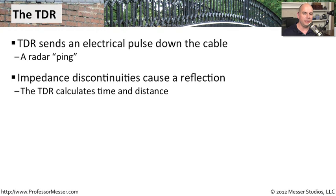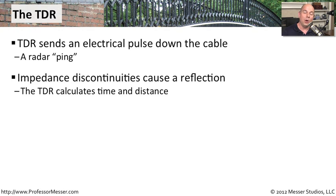The TDR is a very sensitive device that can detect any type of reflection coming back. Because it can calculate how long it took to receive the signal back, it can determine how far down the cable that signal traveled. It can tell you exactly how long the cable is, how far into the cable a splice was made, or direct you — for example, 55 feet down the cable — to find a specific problem.